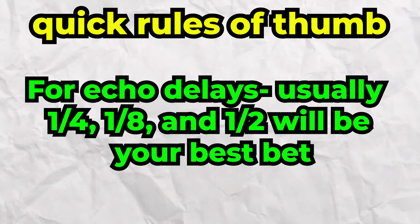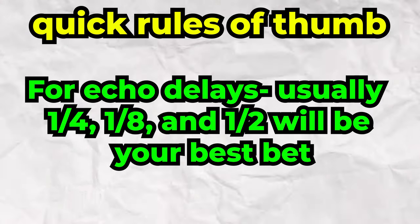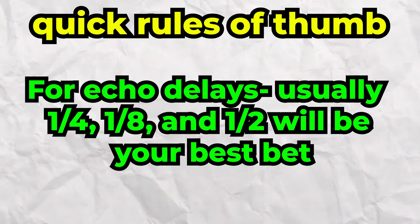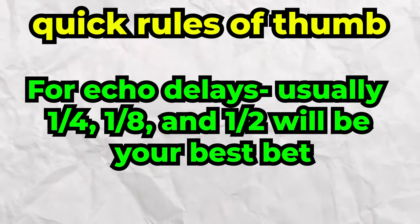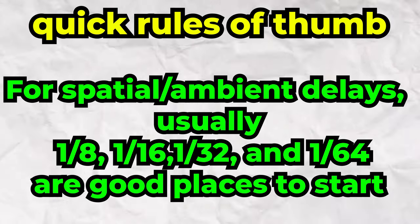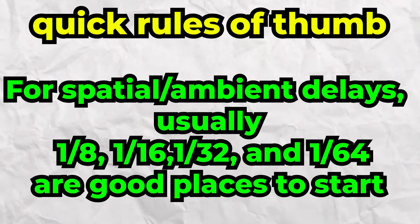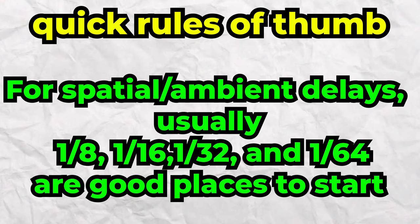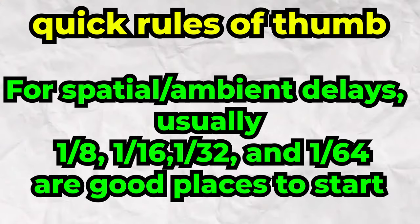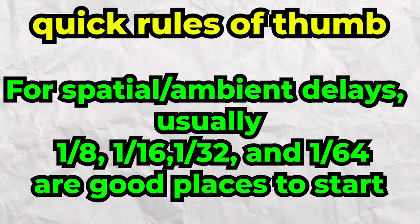Now you would just set this to whatever vibe feels right for your track. Some quick rules of thumb: if you're trying to get an echoey type effect on certain words and phrases, usually the quarter note or the half note is going to be your best bet. But for spatial type effects that are really just trying to add dimension to the vocal, usually eighth, maybe sixteenth or 32nd is going to be your best for that.